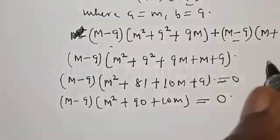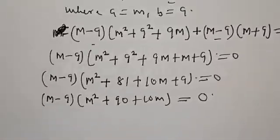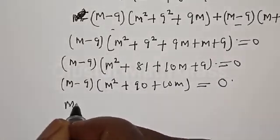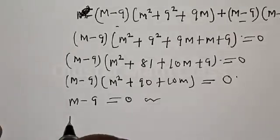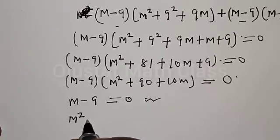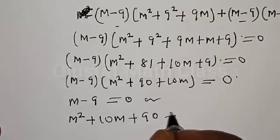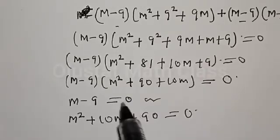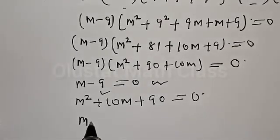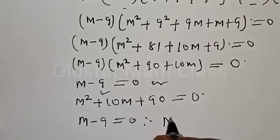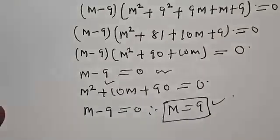Either factor equals zero: M minus 9 equal to 0, or M² plus 10M plus 90 equal to 0. From the first case, M minus 9 equal to 0, therefore M equal to 9.